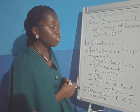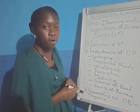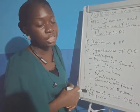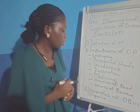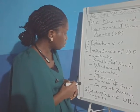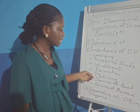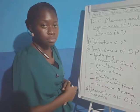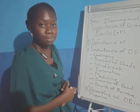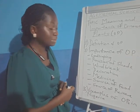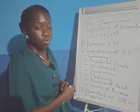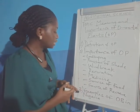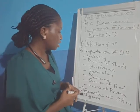Then ornamental plants can be used as an expression of love. One of the importance of ornamental plants is that it serves as a source of medicine. We have some herbs that can be used as medicine, which include aloe vera and lemongrass.